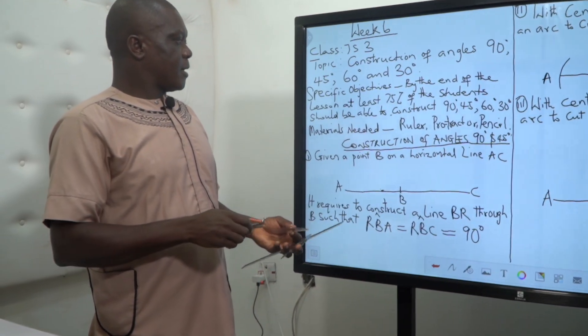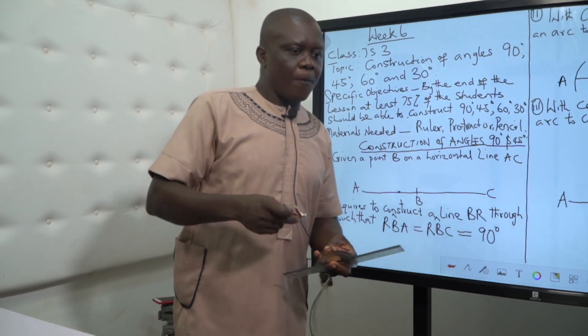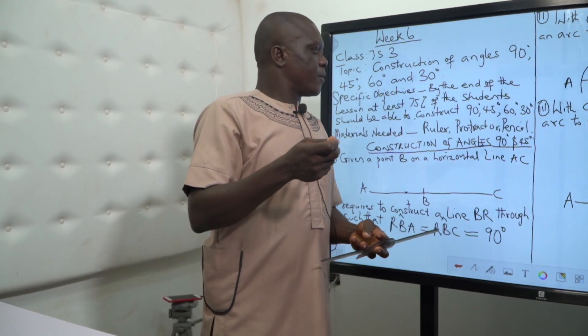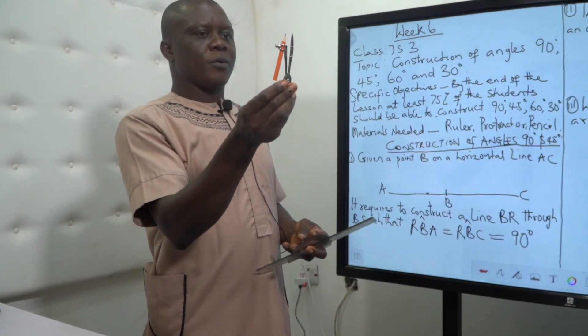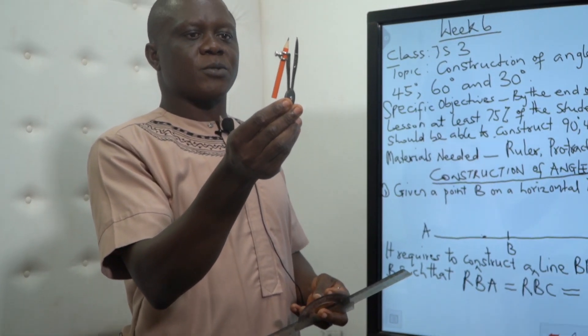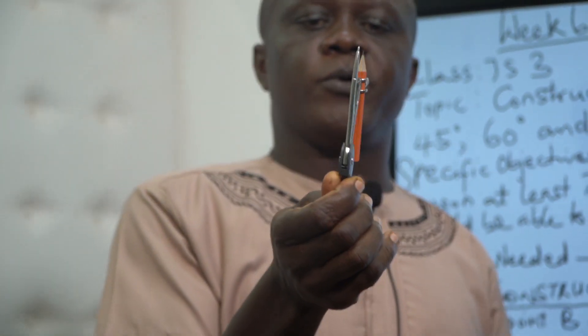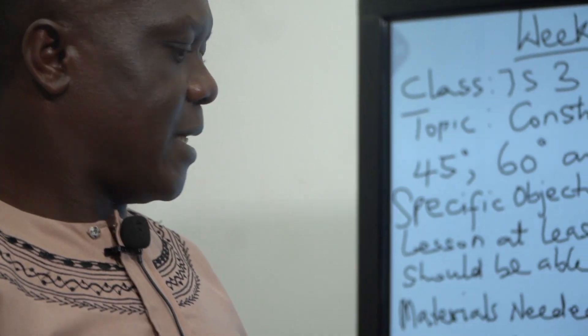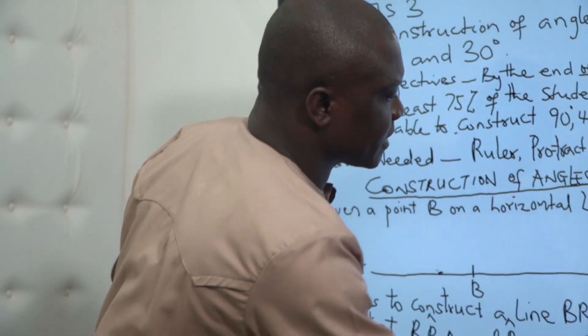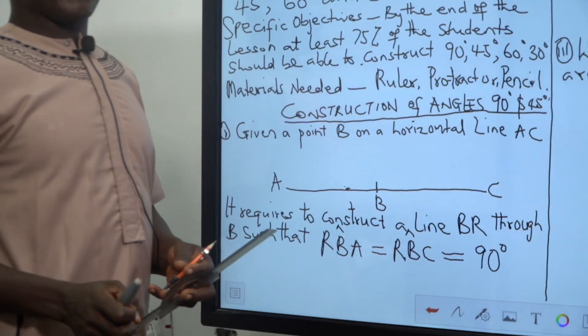Then another one is a pair of compass. A pair of compass is this one now that has a pencil on it, and that is the one we are going to be using in drawing an arc. Arc is just a shape of this kind, this is an arc.